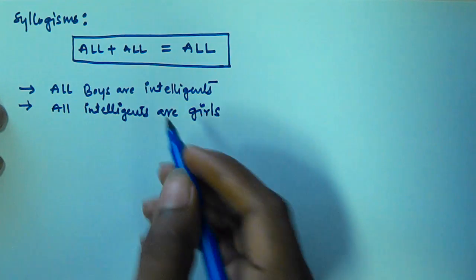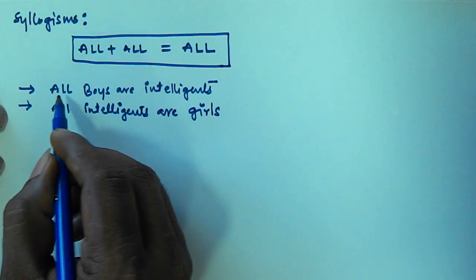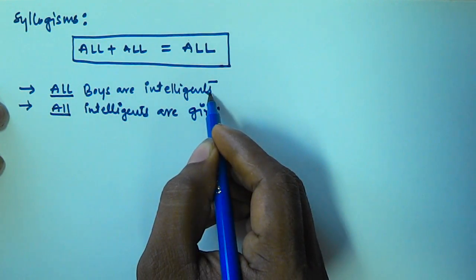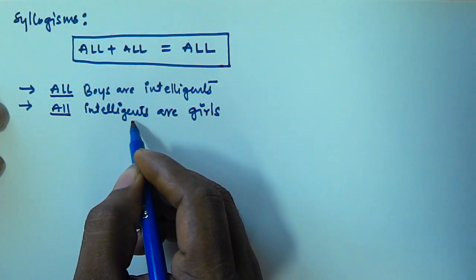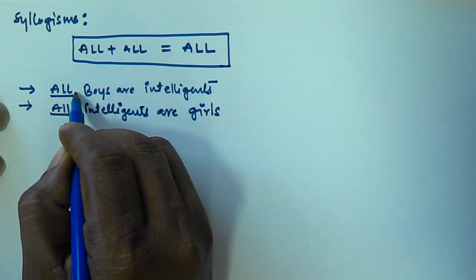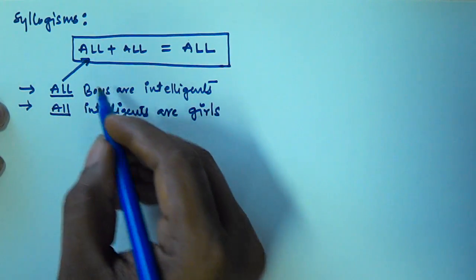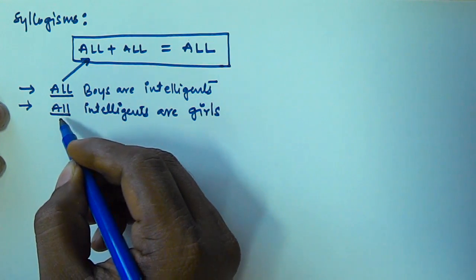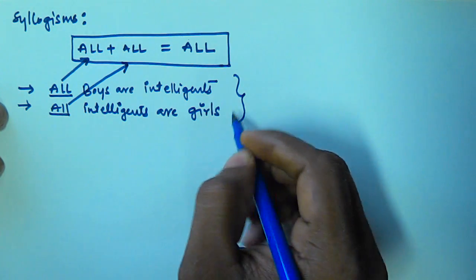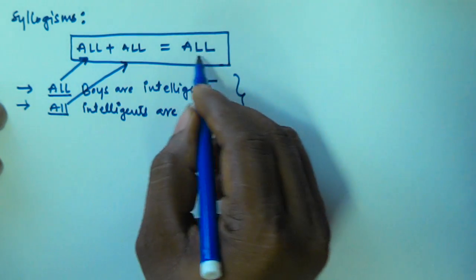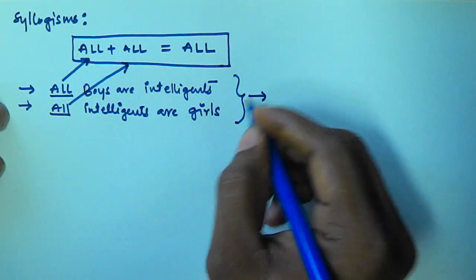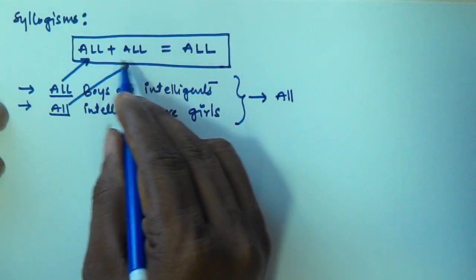If you see these two syllogisms, both are starting with 'all'. Here the subject is boys and the predicate is intelligent. In the second syllogism the subject is intelligent and the predicate is girls. So all plus all — the conclusion we derive from these two syllogisms also starts with all.